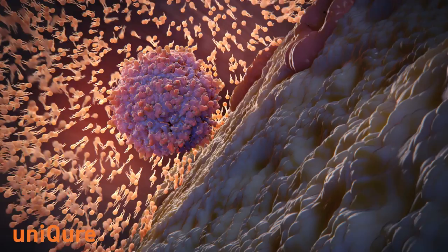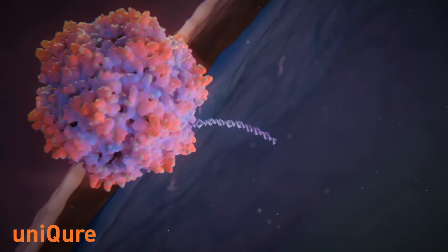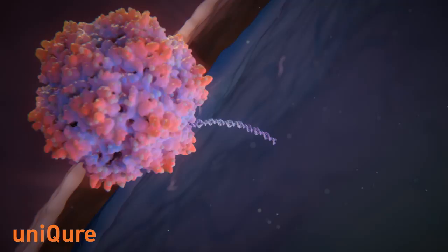Once within the target cells, the capsid is shed inside the nucleus to release its vector genome. The vector genome does not integrate into the nuclear DNA, but instead forms an episome.